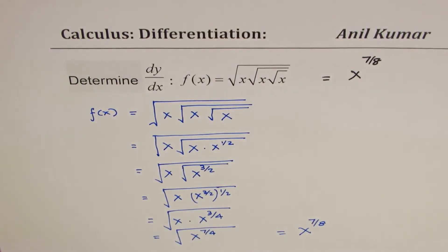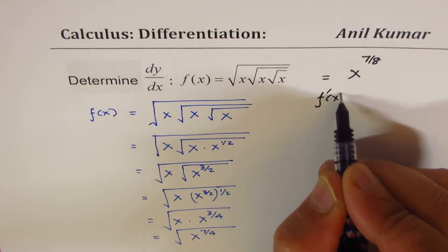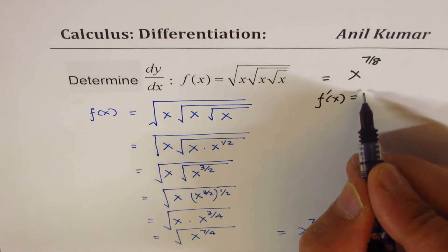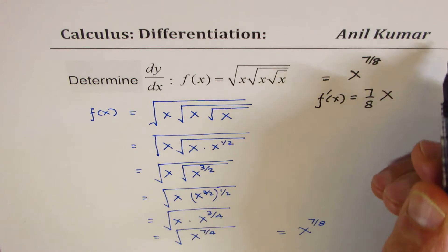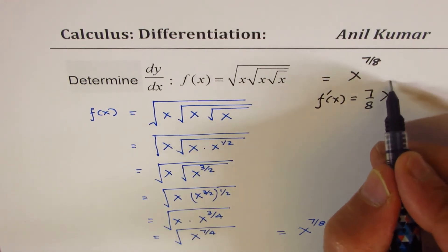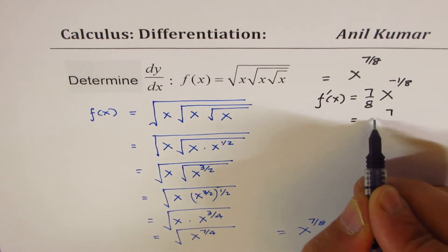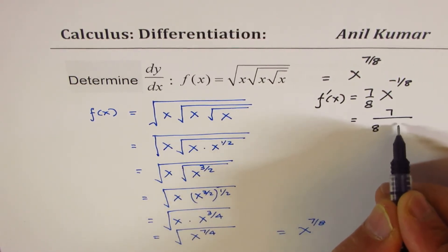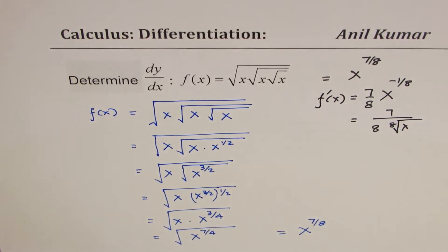Now this is simple. The derivative of f(x) = x^(7/8) is found by applying the power rule: dy/dx = (7/8) · x^(7/8 − 1) = (7/8) · x^(−1/8). You can also write this as 7/8 times the 8th root of x.